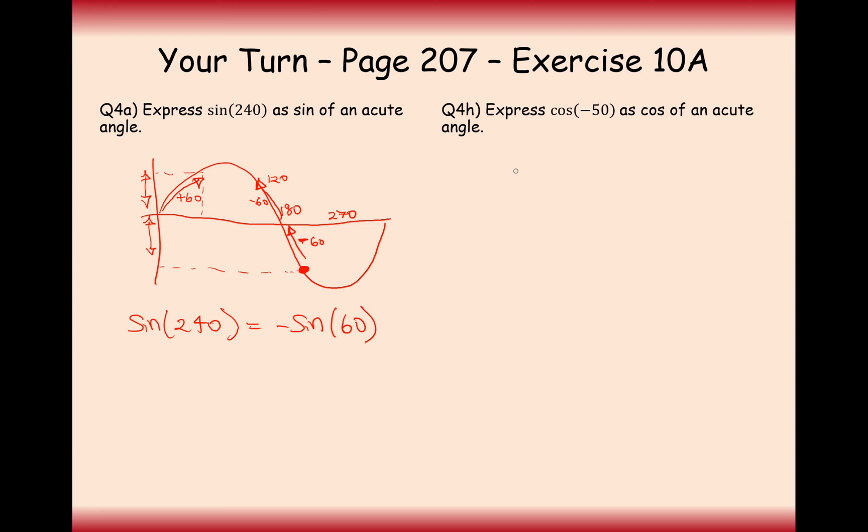Express cos of minus 50. Cos here, we'll need the positive and the negative side here. Looks something like this. So minus 90 degrees will be here, minus 50 degrees will be here. So moving across, it's just going to be 50 degrees here, using the symmetry of the cos graph. So here, cos of minus 50 is going to equal cos of 50. That one's a nice, easy one.